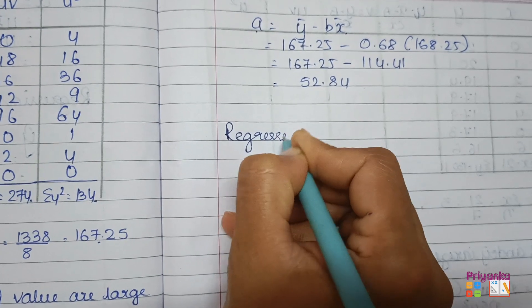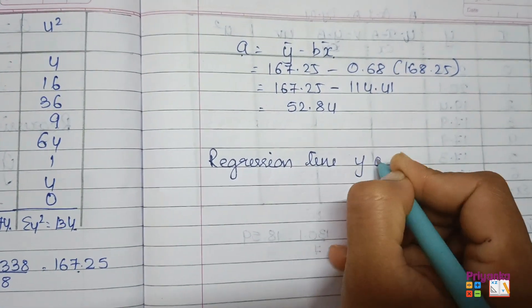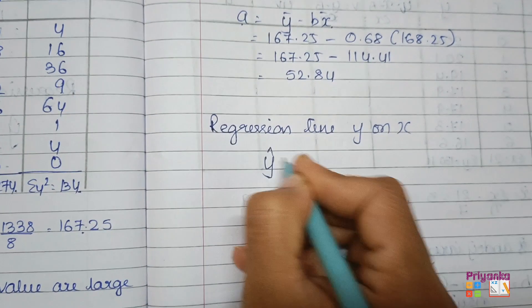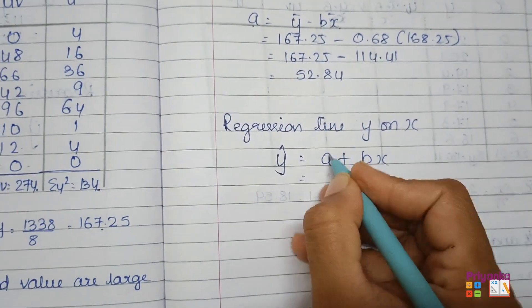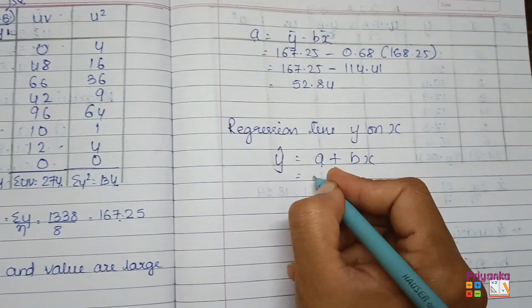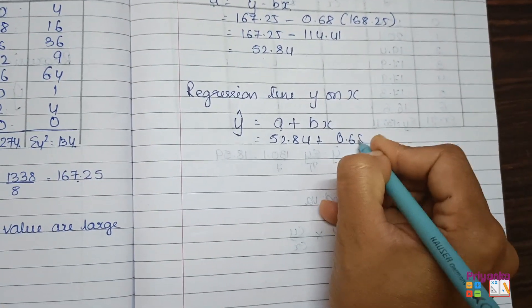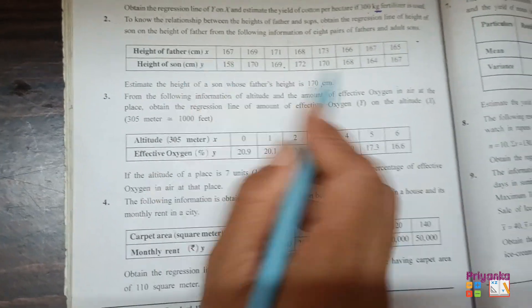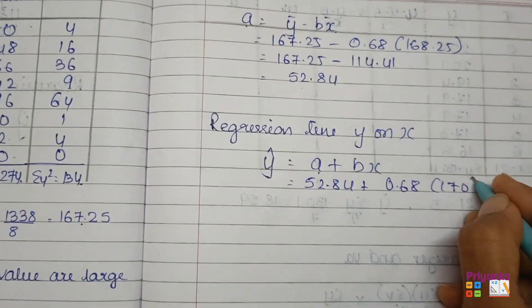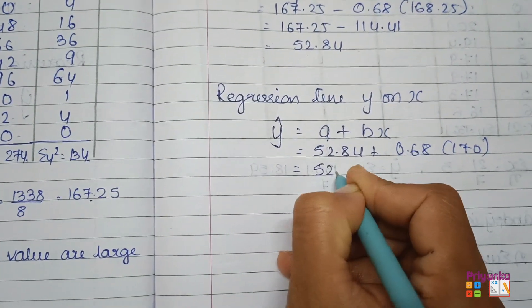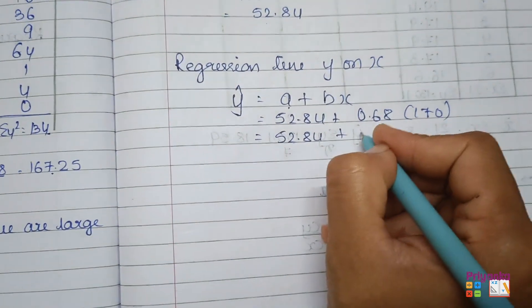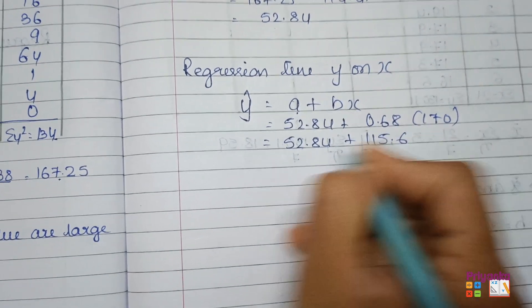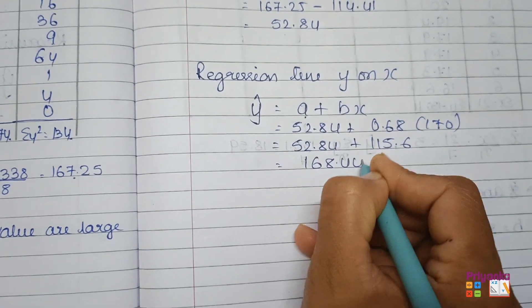Finally, the regression line y on x: ŷ = A + Bx = 52.84 + 0.68x. The x given in the question is 170 cm, and since the data is also in centimeters, we can substitute directly. Multiply: 0.68 × 170 = 115.6. Adding: ŷ = 52.84 + 115.6 = 168.44.